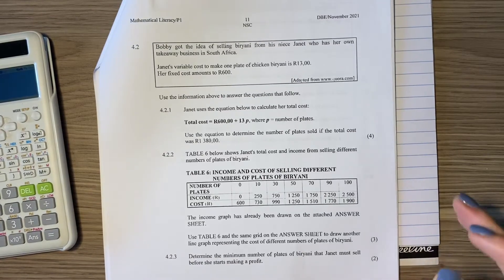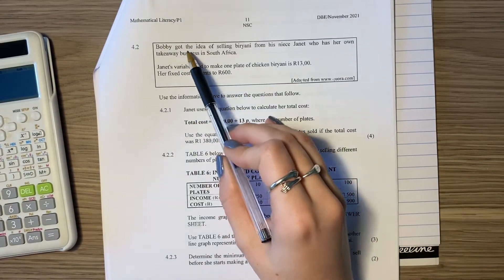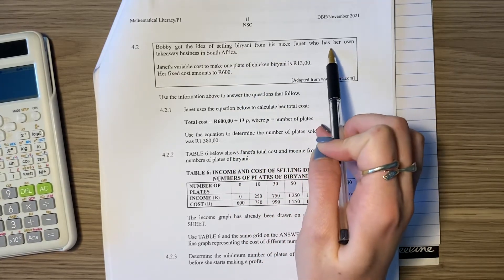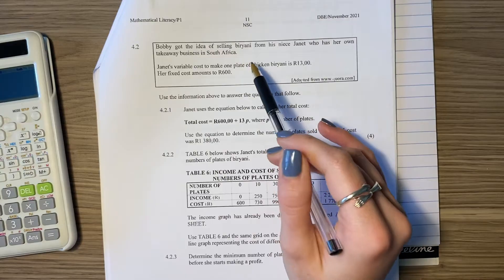Let's look at question 4.2. So 4.2 says Bobby got the idea of selling briyani from his niece Janet who has her own takeaway business in South Africa.